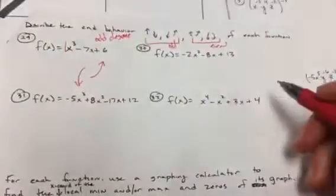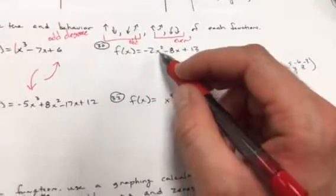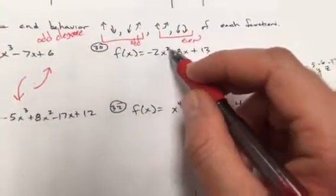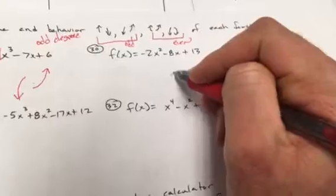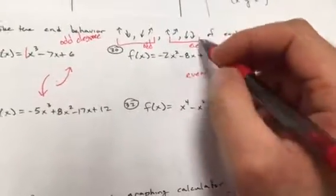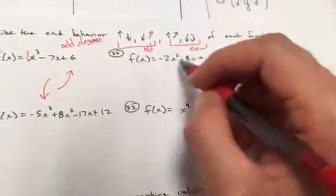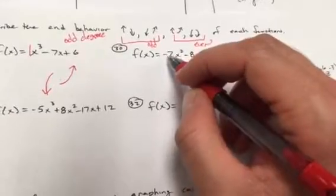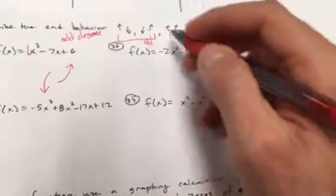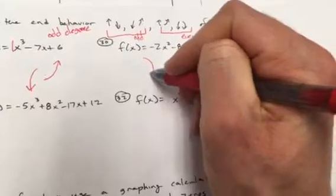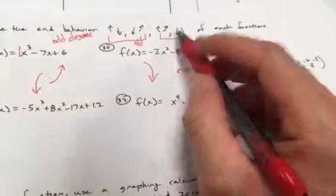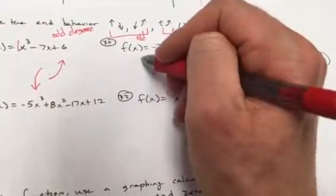For problem 30, the highest power is 2, which is even — so it's an even degree function, meaning it ends by going in the same direction. The leading coefficient is negative 2, so negative means it goes south. It's going to end by going south, and the other end also goes south.